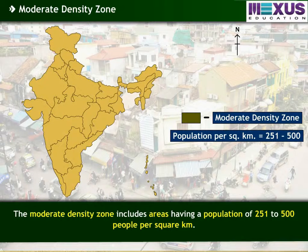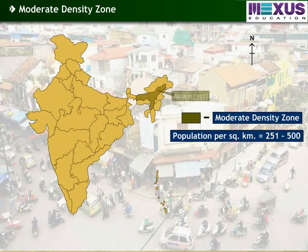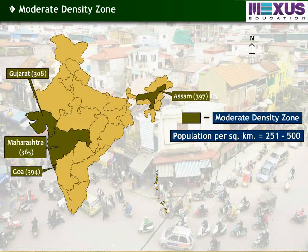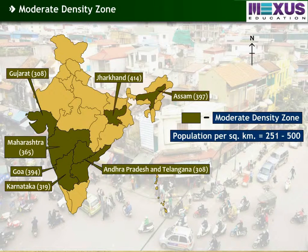The moderate density zone includes areas having a population of 251 to 500 people per square kilometer. The states falling under the moderate density zone are Assam, Gujarat, Goa, Maharashtra, Karnataka, Jharkhand, Andhra Pradesh, Telangana, Odisha, and Tripura.